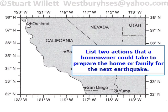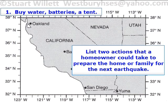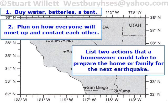Last question: list two actions that a homeowner could take to prepare the home or family for the next earthquake. There are certain materials you could buy — in an earthquake, power might go out, you might lose water, so it would be nice to have water stored, batteries, flashlights, candles. Something the family could do is have a plan: what if there was an earthquake and you were at school or at work — how is everybody going to get in contact?